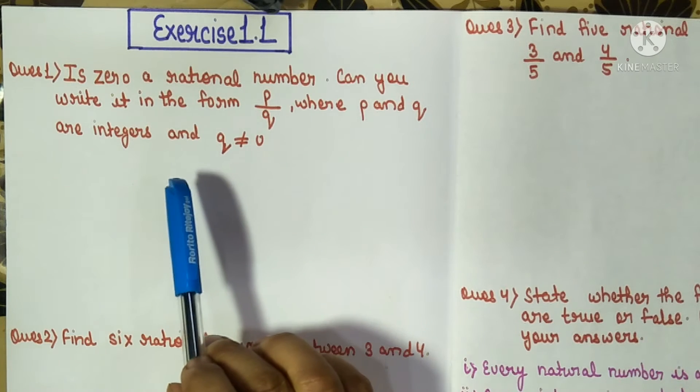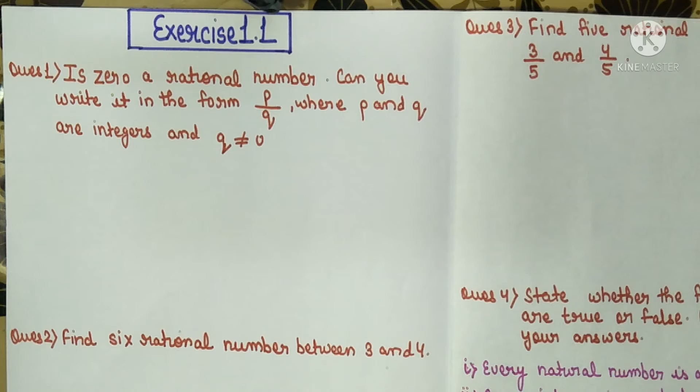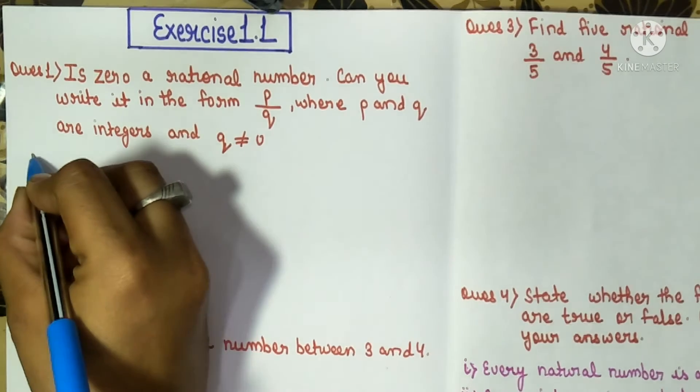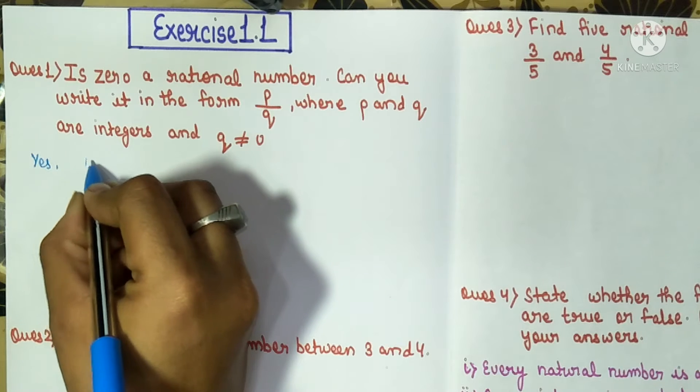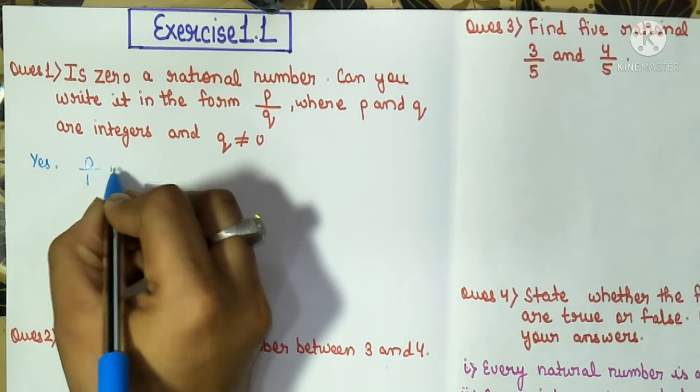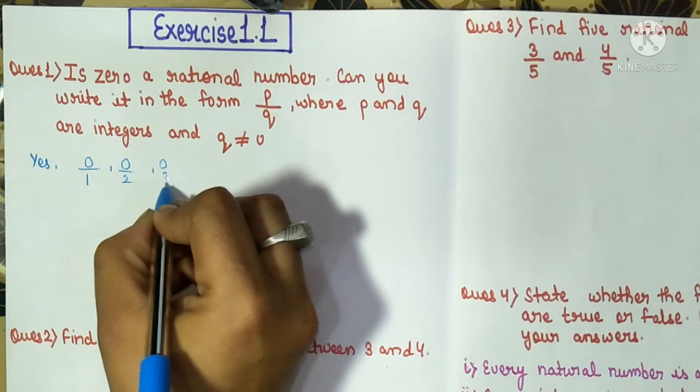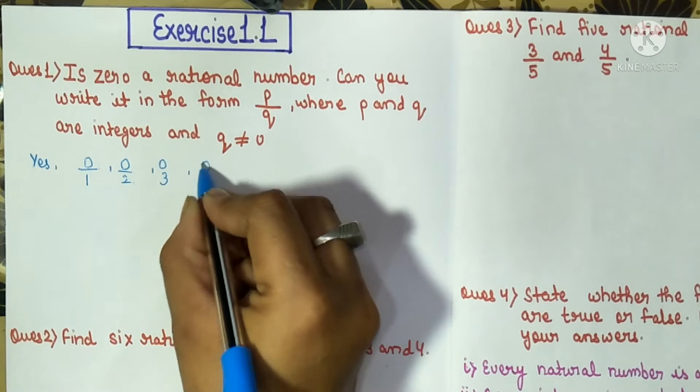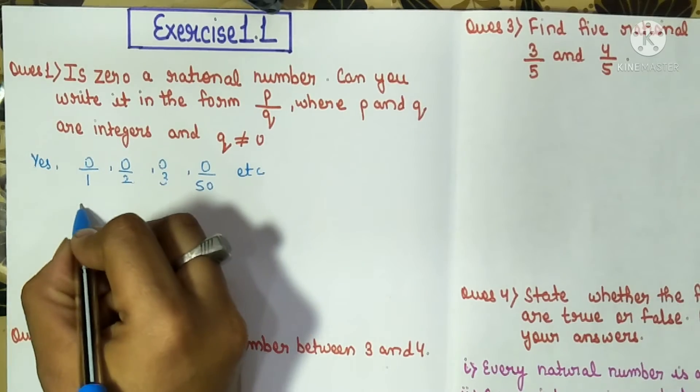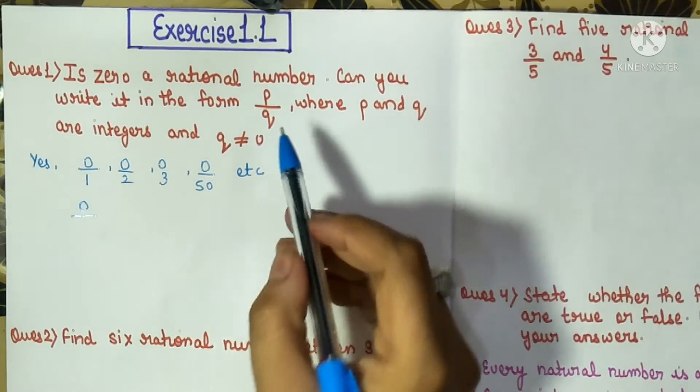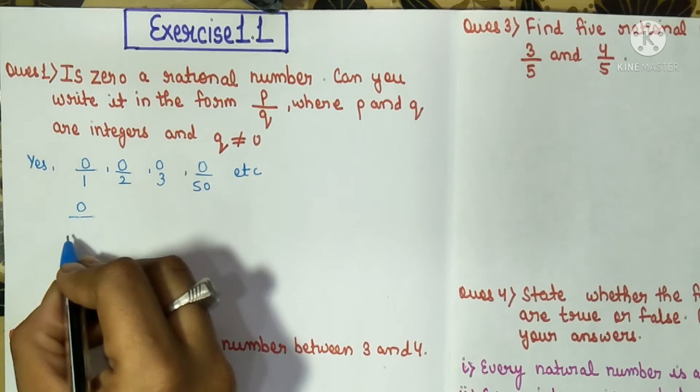So our answer will be yes, because we can write zero in the form of zero by one, zero by two, zero by three, and so on—zero by fifty, etc. Also, our denominator can be negative because it is stated that p and q are integers, and integers are both positive and negative.